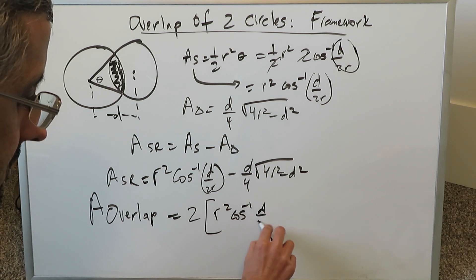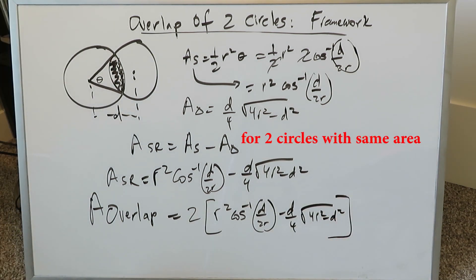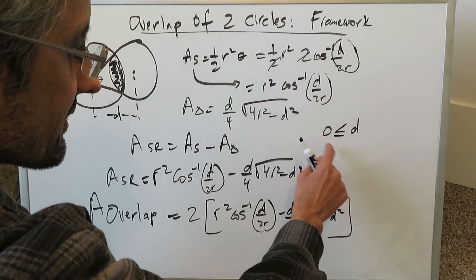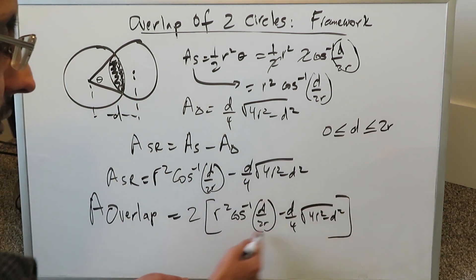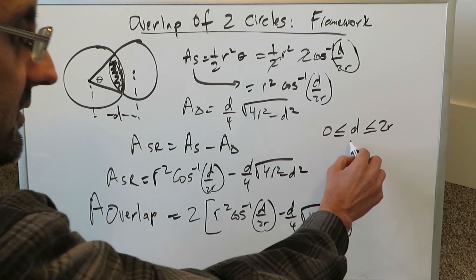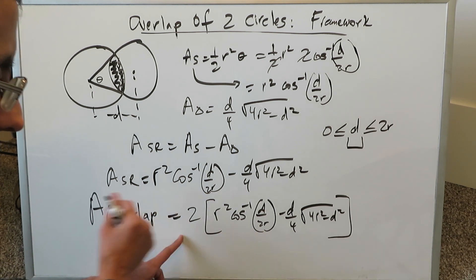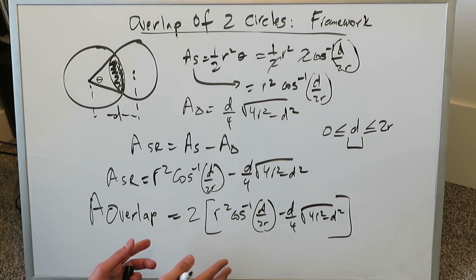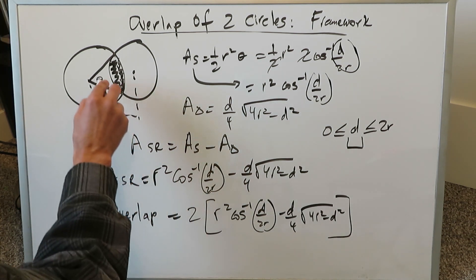The formula for the area of overlap of two equal circles is: two times [ r² · arccos(d / 2r) minus (d/4) · √(4r² − d²) ]. This holds under the constraint that the distance d is greater than or equal to zero (complete overlap) and less than two r (otherwise no overlap). All you need to know is the radius r and the distance d between the two centers to calculate the area of overlap.